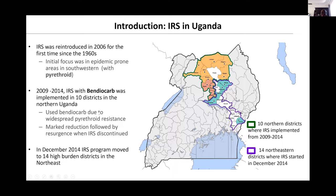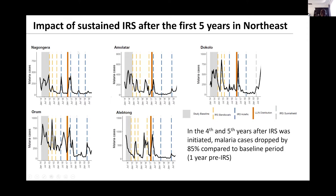Our interest is going to focus on five districts in northeastern Uganda. On the x-axis we have duration in months from January 2014 all the way to July 2019. On the y-axis we have malaria cases. The five graphs have similar x and y-axes.